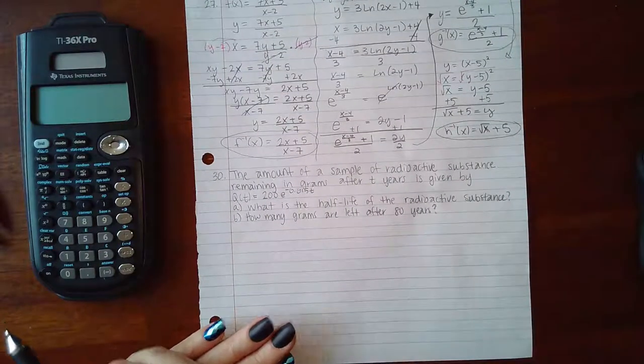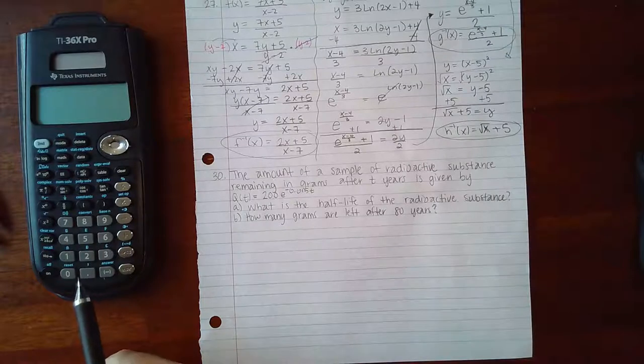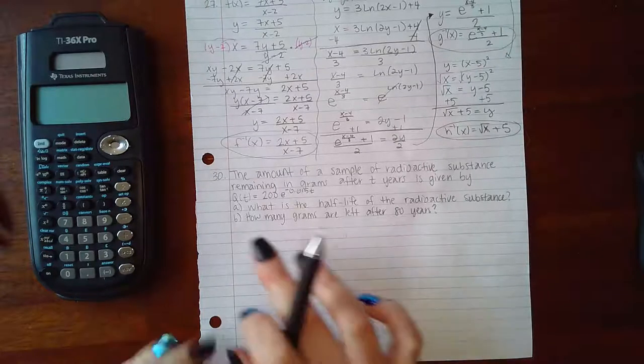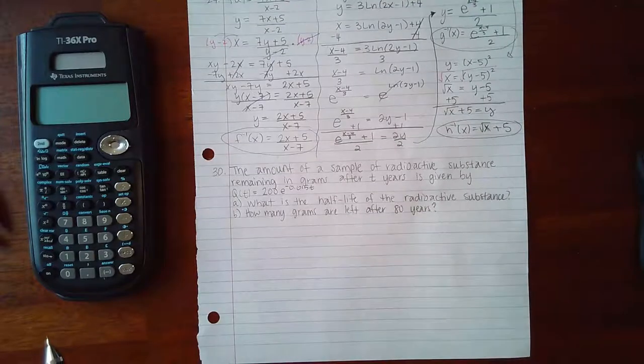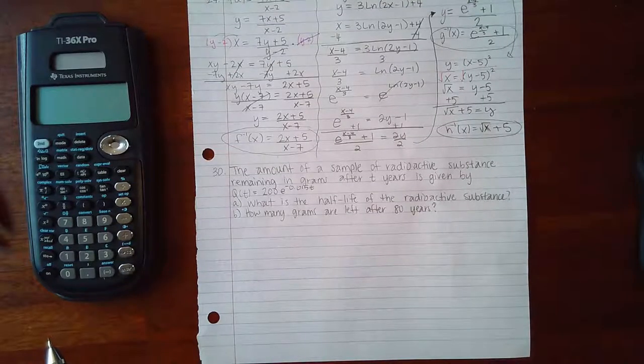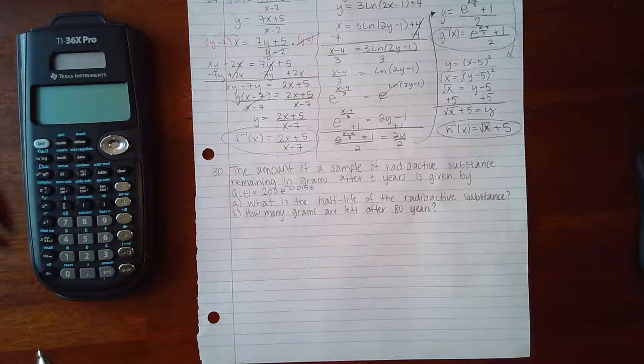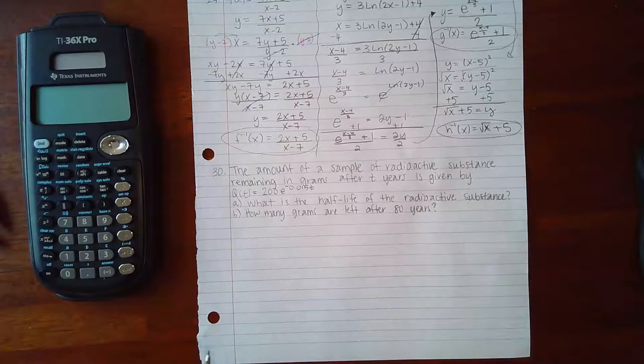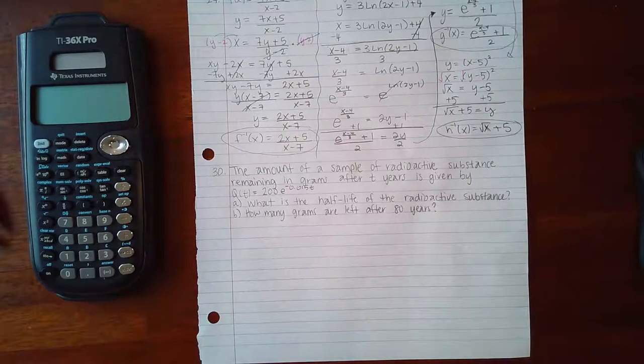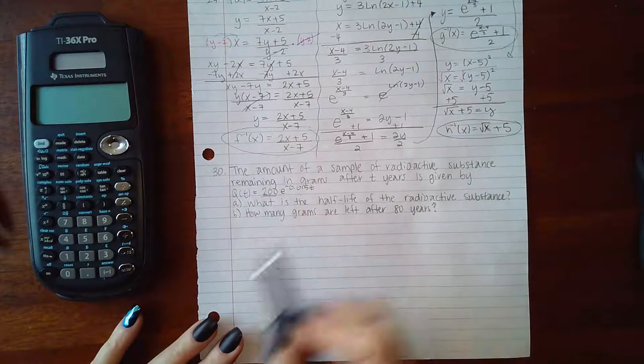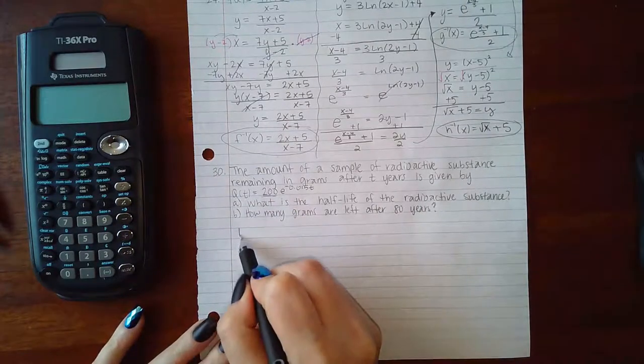Now number 30 says the amount of a sample of a radioactive substance remaining in grams after t years is given by this equation: q of t equals 200 e to the negative 0.015t. So the two parts are: what is the half-life of the radioactive substance? Half-life means how long does it take for you to have only half of the initial amount remaining. Well, the initial amount is here, 200, and half of that would be 100.